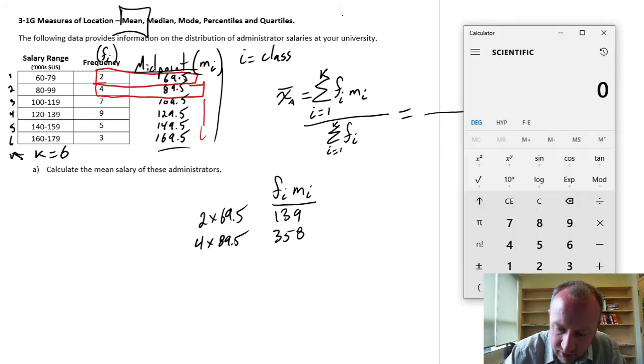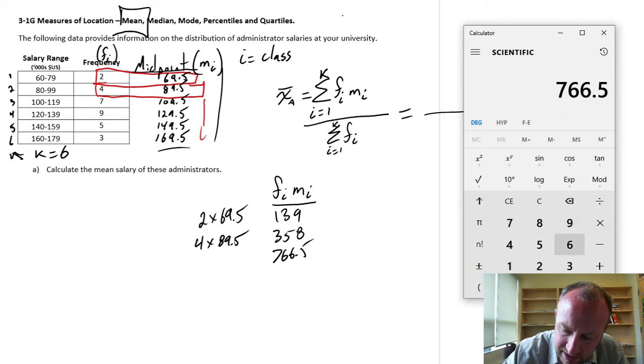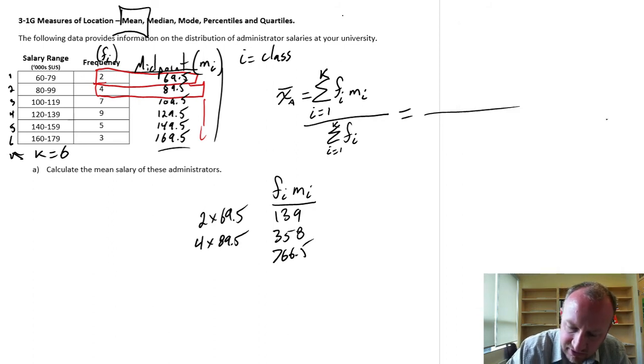The next one was 7 as my frequency, times the midpoint 109.5, which is 766.5. Next, 9 is my frequency, midpoint's 129.5. So 1165.5.